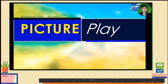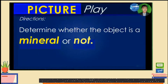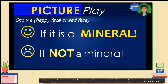From the first activity called Peach or Play, the directions are very simple. All you need to do is to determine whether the object is a mineral or not. That is by showing these reactions. You may show a happy face if the object depicts a mineral, and a sad face if the object depicts not a mineral. Let me see your reactions to them.